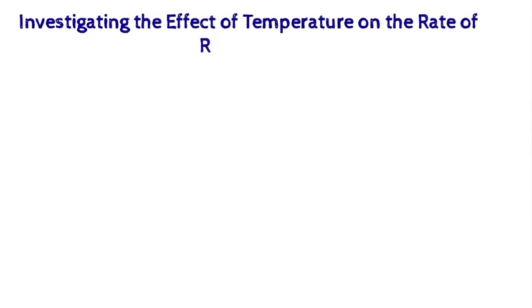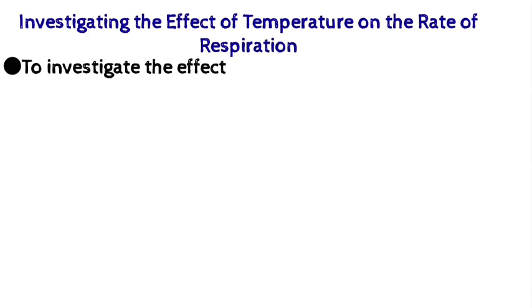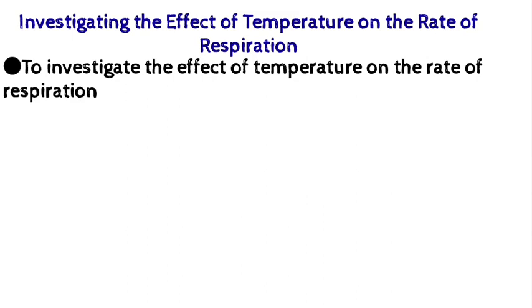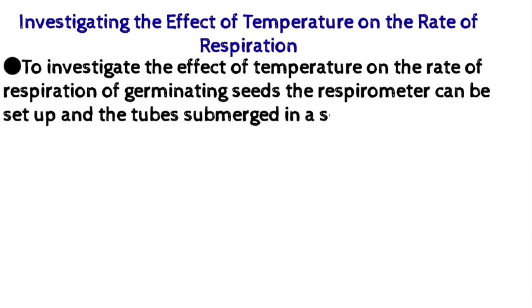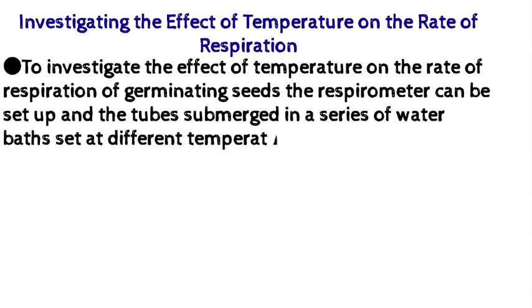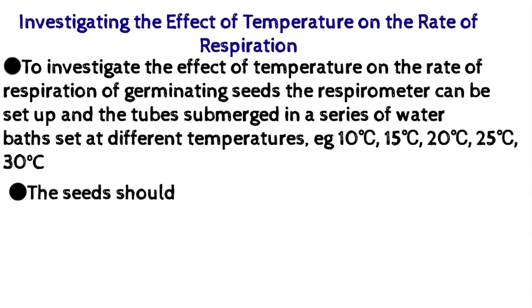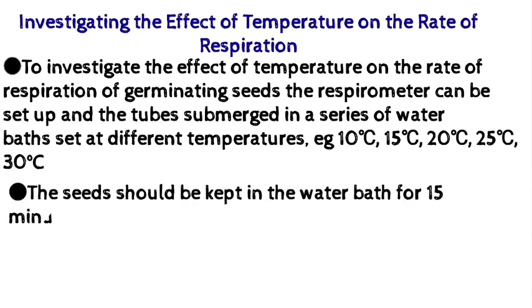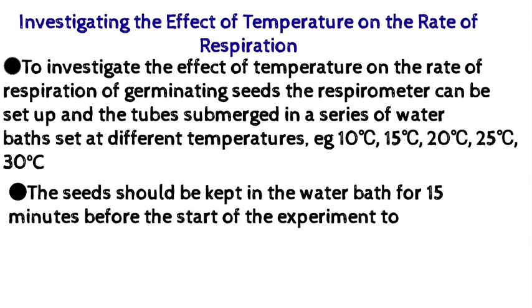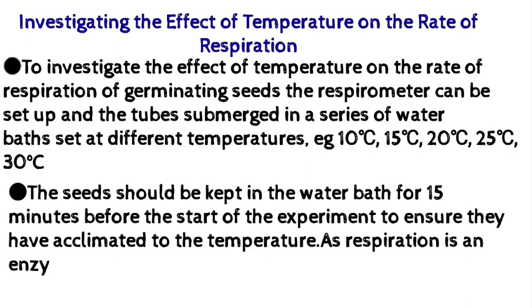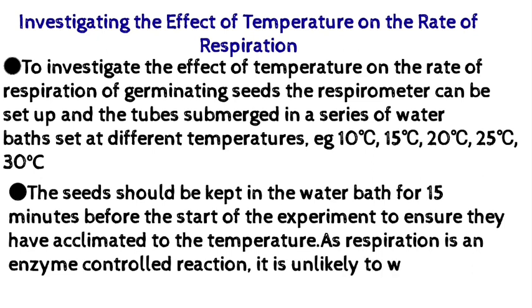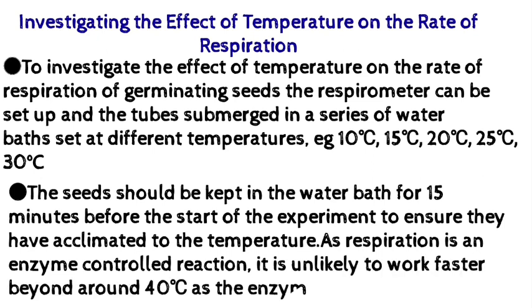Next, we look at investigating the effect of temperature on the rate of respiration. To investigate this using germinating seeds, the respirometer can be set up and the tube submerged in a series of water baths set at different temperatures. The seeds should be kept in the water baths for 15 minutes before the start of the experiment to ensure they have acclimated. As respiration is an enzyme-controlled reaction, it is unlikely to work faster beyond around 40°C, as the enzyme will denature.